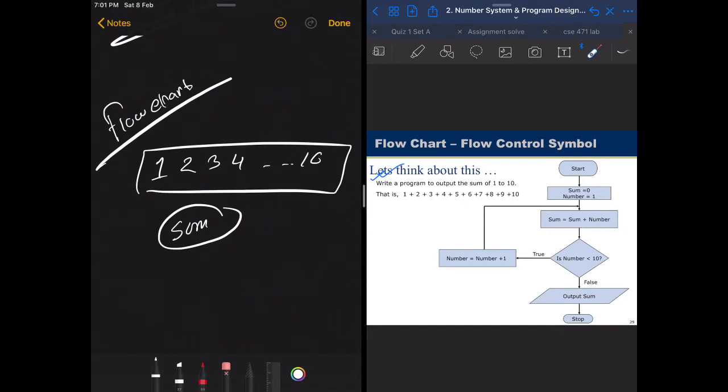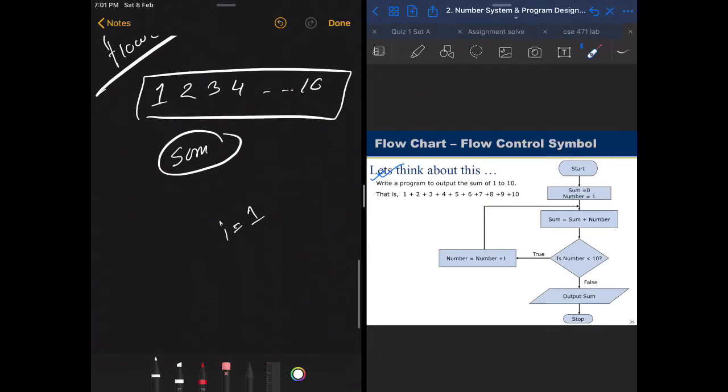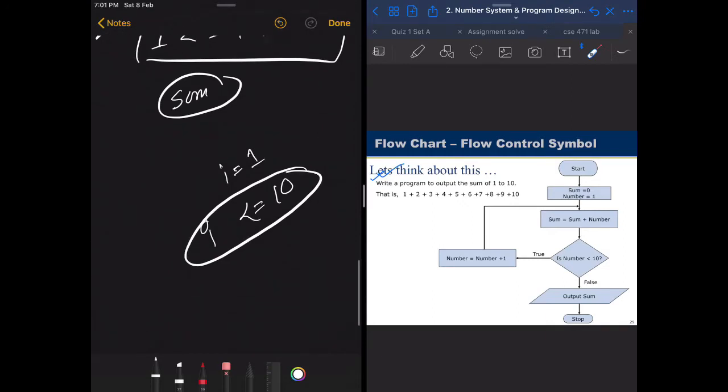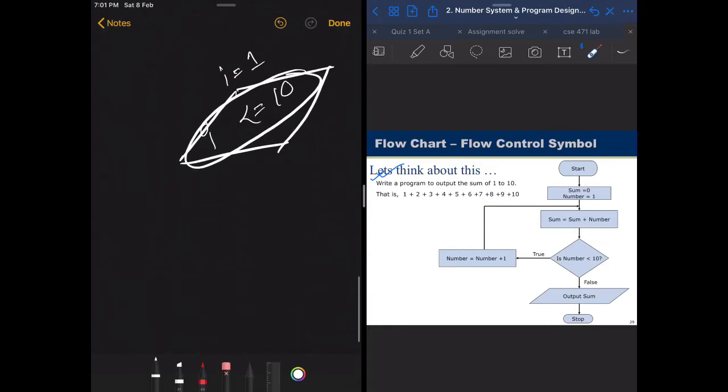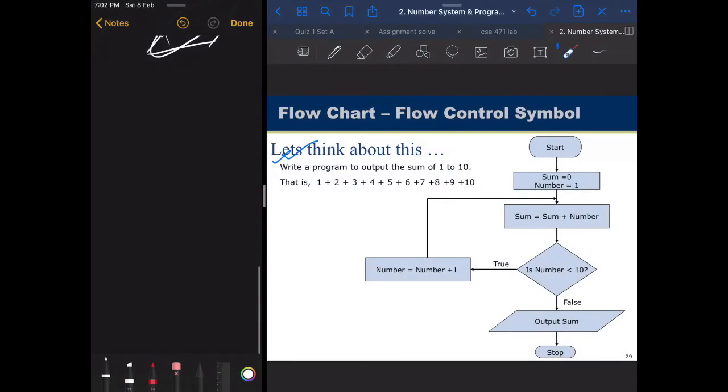However, in the first examples that we talked about, we took inputs from the user, but in this case we are not taking any inputs. Rather, we are using a loop where we are initializing a value where i equals to 1, and this i would go up to 10. So this is basically our condition, our diamond check box.